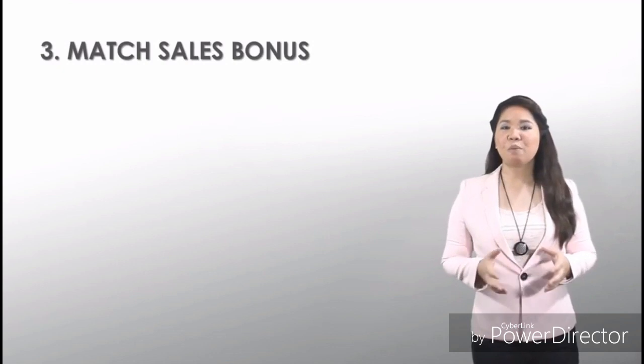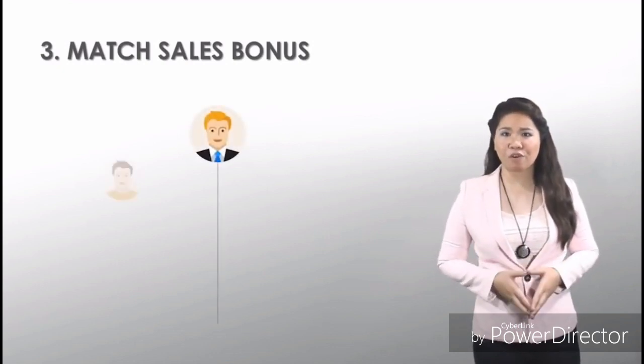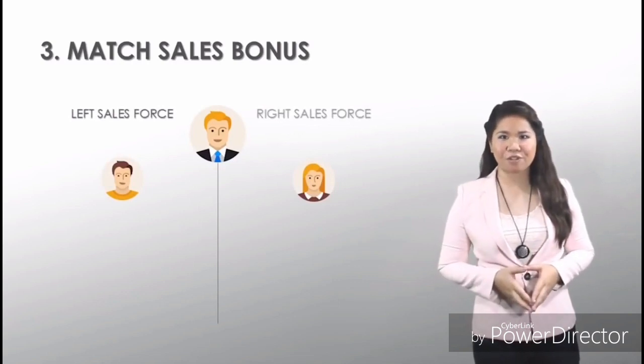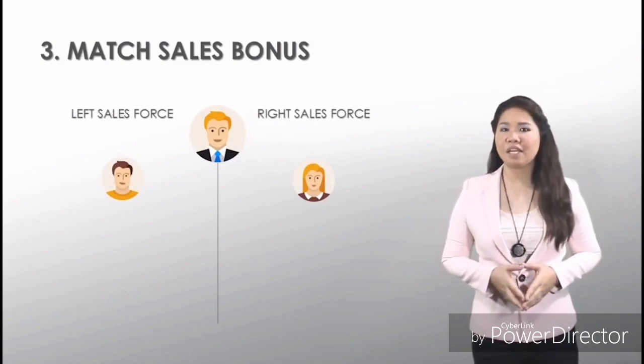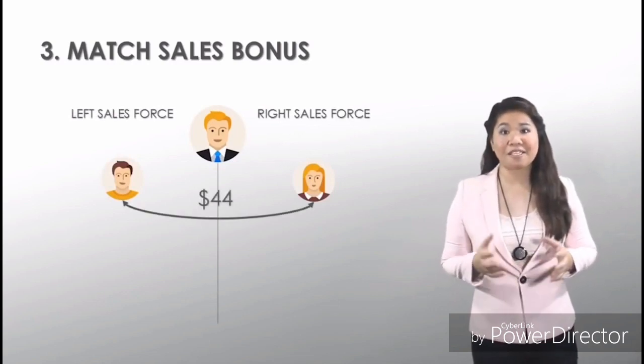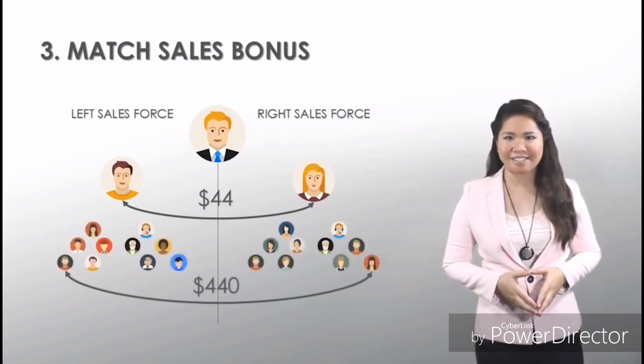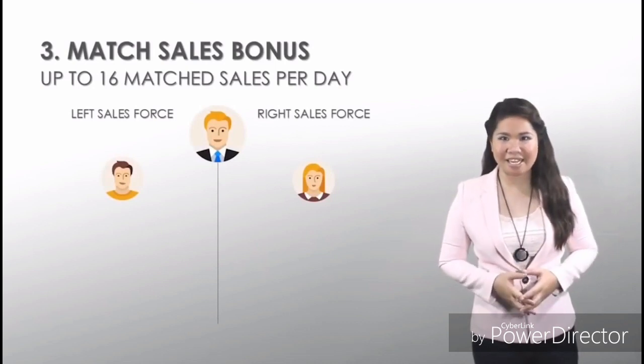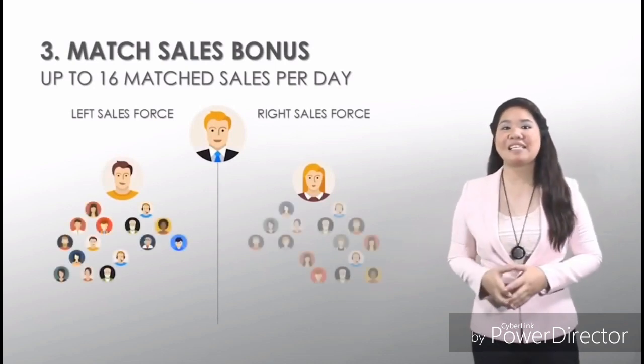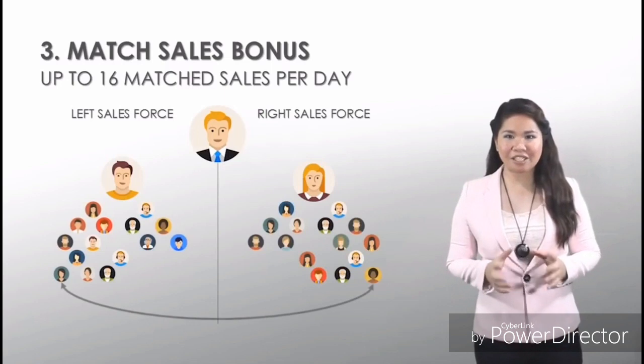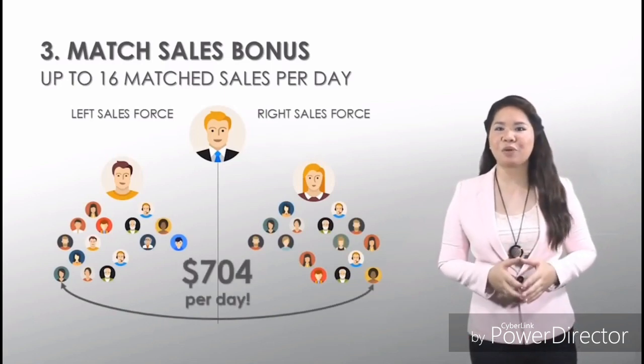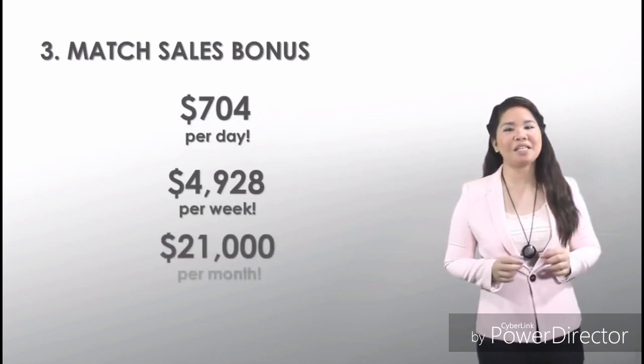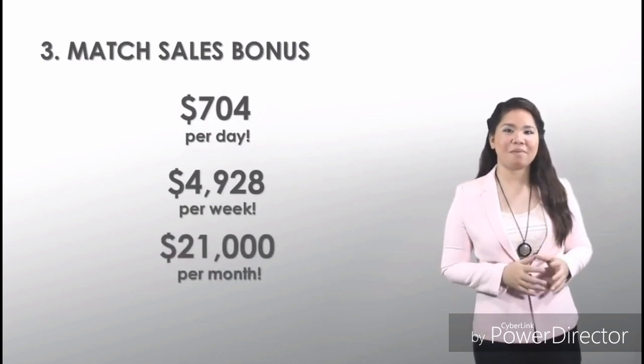Third is Match Sales Bonus. Your group will be divided into 2 Salesforce Groups since we are using binary, the left and the right Salesforce. And for each match, the company will give you $44 US dollars. If it's 10 in a day, that's $440 US dollars. Good news, you are privileged up to 16 matches a day. 16 on your left and 16 on your right. So your potential income per day is $704 US dollars, $4,928 US dollars in a week or $21,000 US dollars in a month.